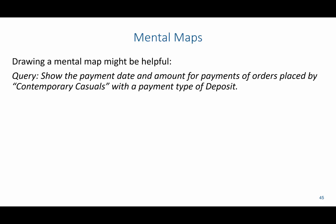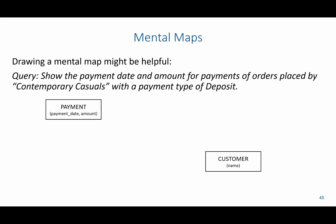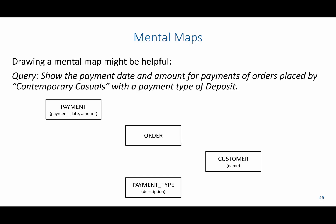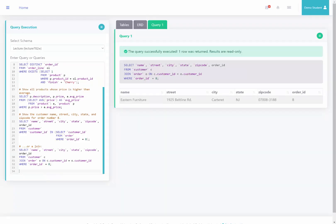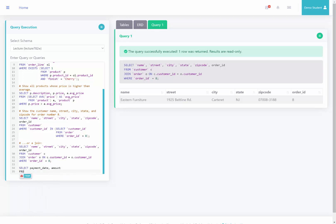For example, if we were to build a subquery to show the payment date and amount of payments of orders placed by Contemporary Casuals with the payment type of deposit, we need the payment table for payment date and amount, the order table to connect to the customer table where we find Contemporary Casuals, and the payment type table for deposit. What we want to return starts from the payment table. We get payment date and amount, and we need to connect through order ID to order, then through customer ID to customer, and through payment type ID to payment type.